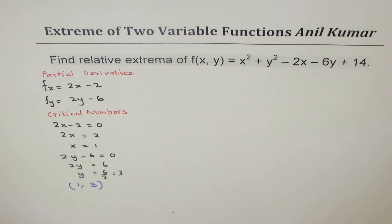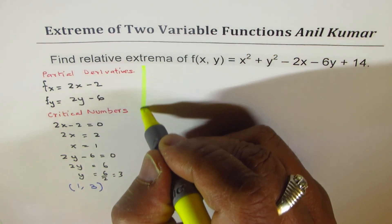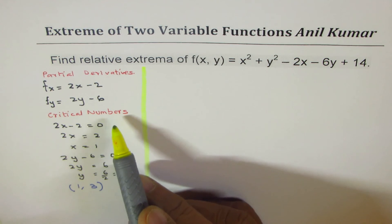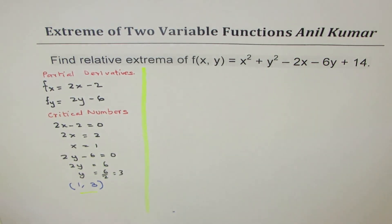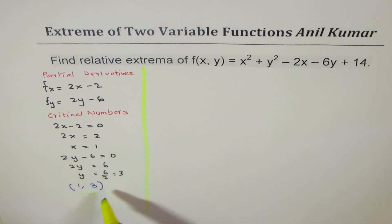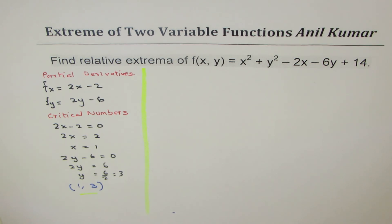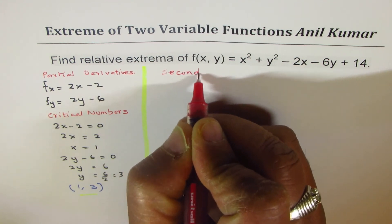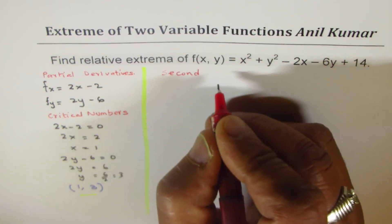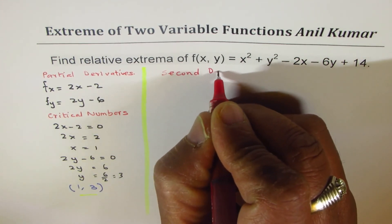The first step is to find the partial derivatives and equate them to 0 to find the critical number. Once we have the critical number, we test whether we have a maximum, minimum, or neither — using the second derivative test.